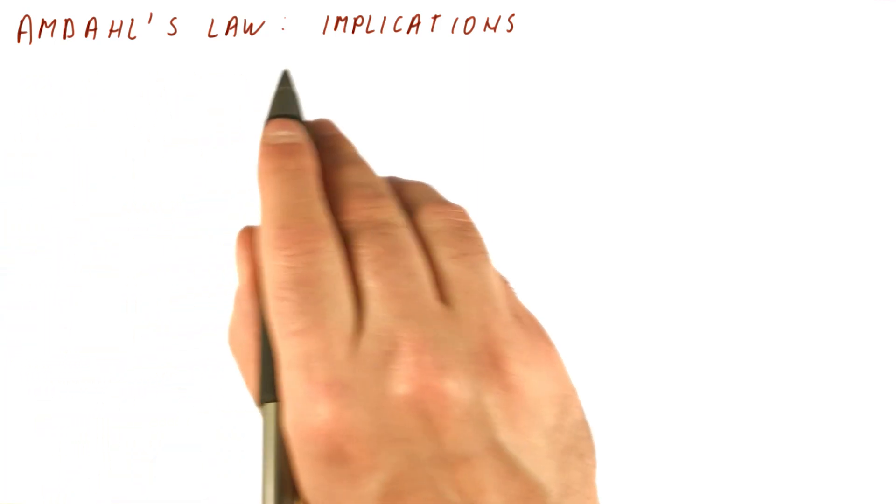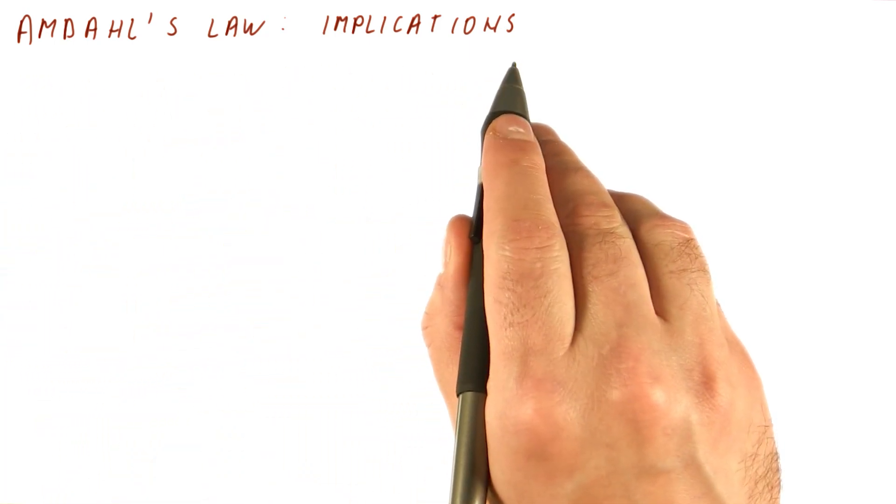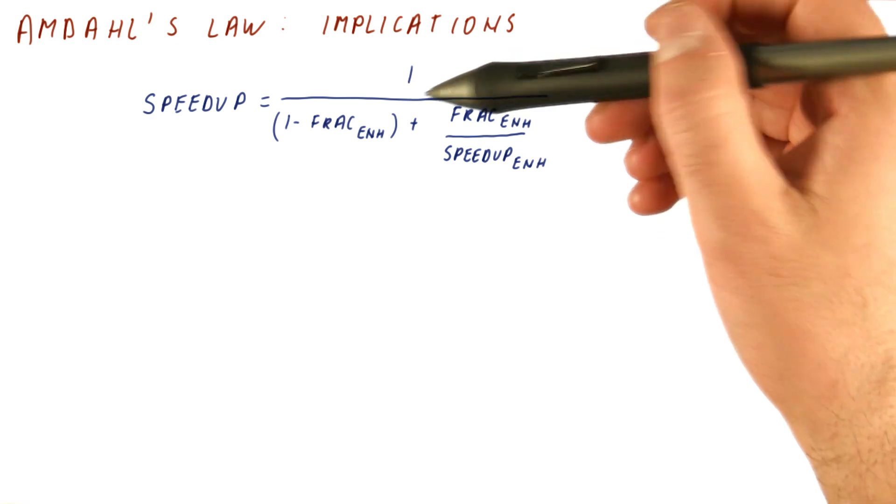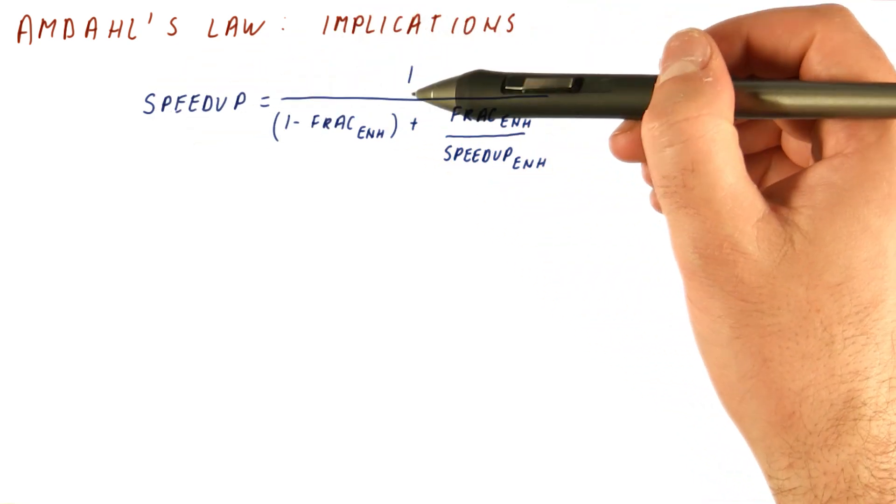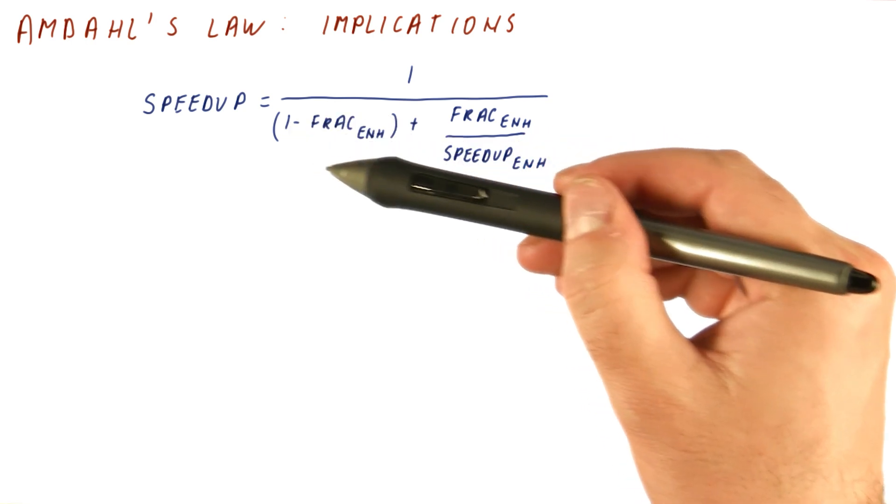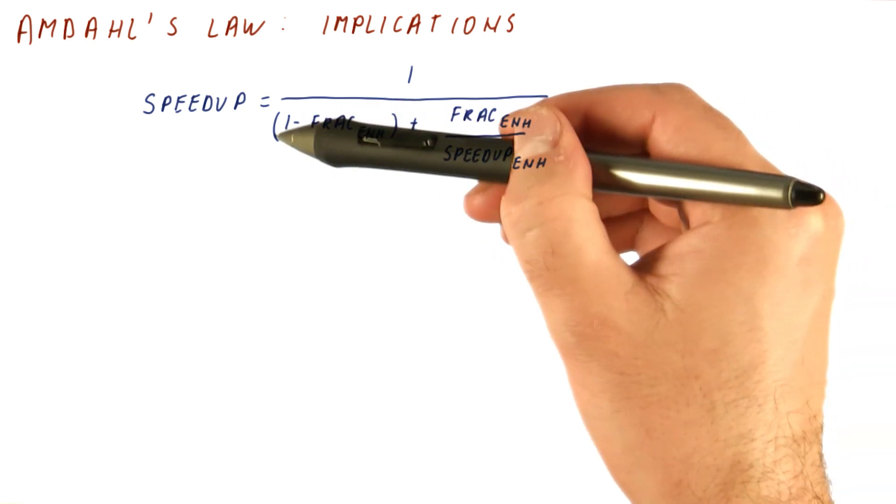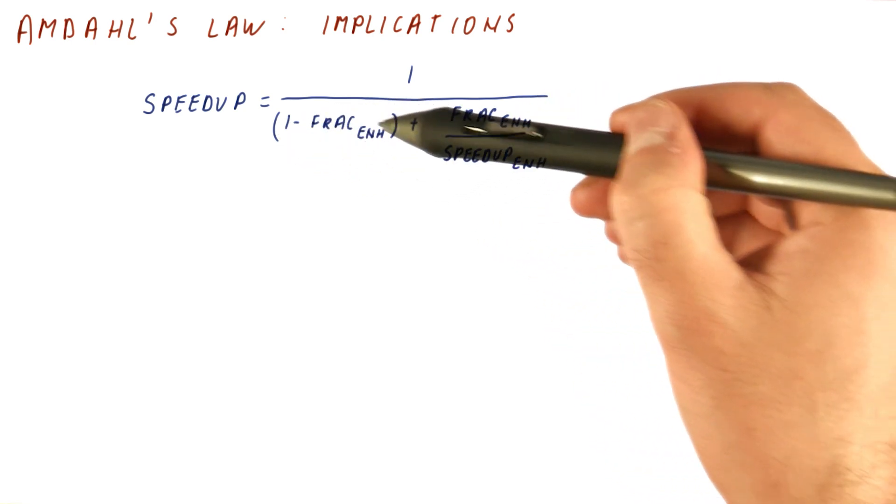We can see in Amdahl's law, let's talk about what it implies for our improvements. Amdahl's law says that speedup is equal to 1 over 1 minus fraction enhanced. This is the part of the program that we didn't enhance, and it just figures here.